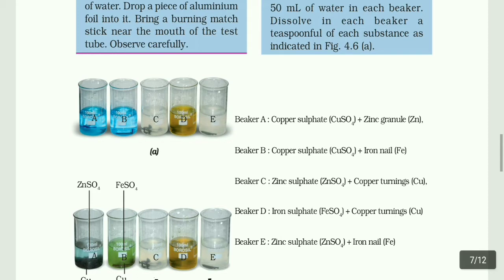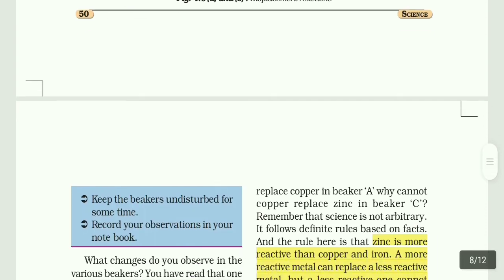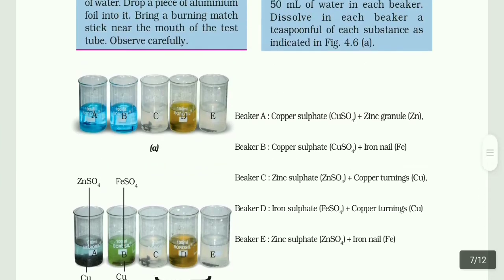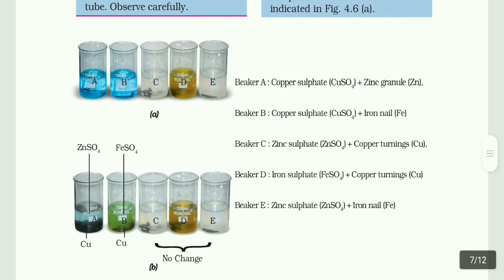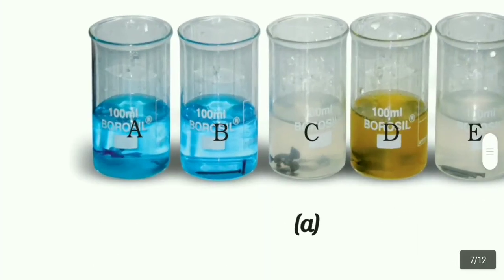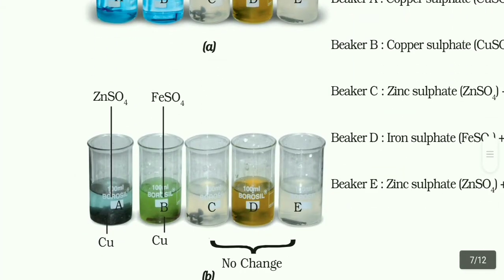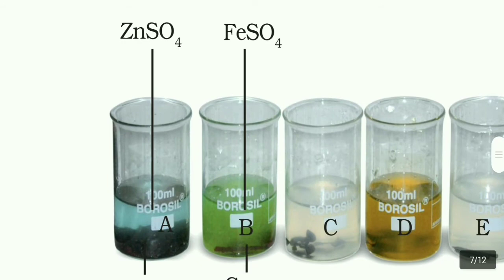Add two substances to each beaker, then keep the beakers undisturbed for some time and record your observations in your notebook. After some time, check the beakers. Comparing beaker A and beaker B, you can see some changes — in beaker B there is a black deposit and the water appears separated.